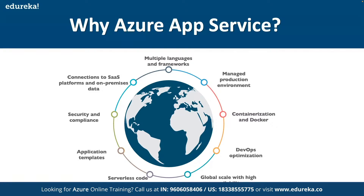We can host our application anywhere in Microsoft's global data center infrastructure and maintain high availability. Another advantage is connections to SaaS platforms and on-premise data — you can choose from hundreds of connectors for enterprise systems like SAP, SaaS services like Salesforce, and internet services like Facebook. You can also access on-premise data using hybrid connectors and Azure virtual networks. App services are ISO, SOC, and PCI compliant, with IP restrictions, service identities, and subdomain takeover prevention.